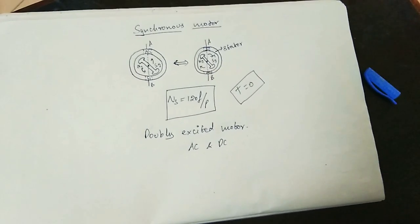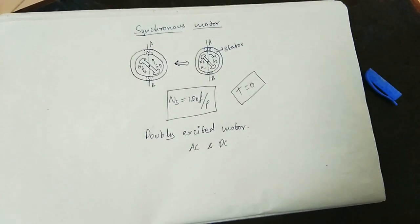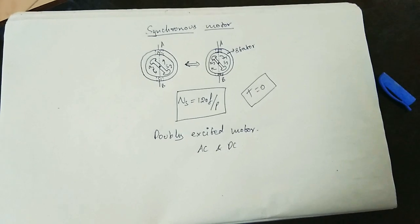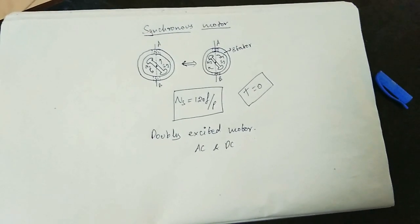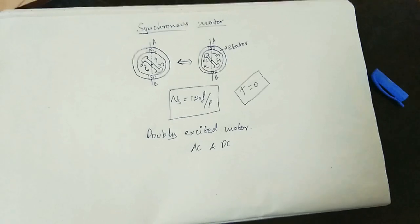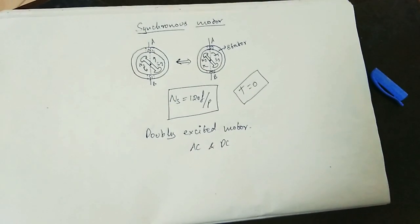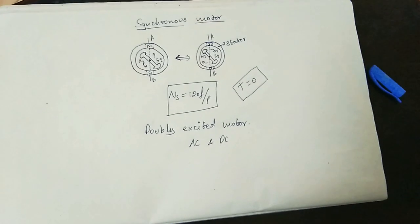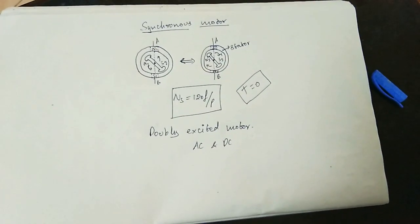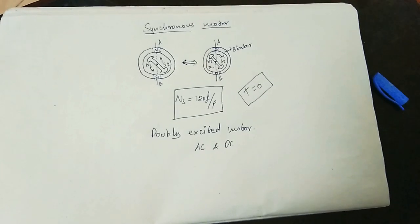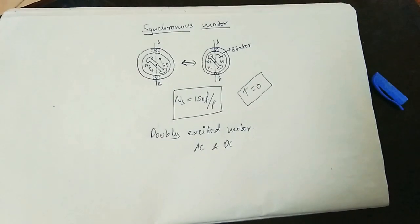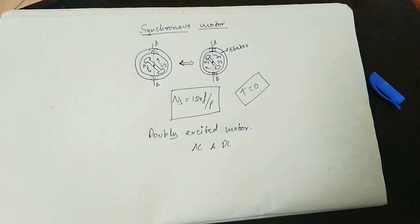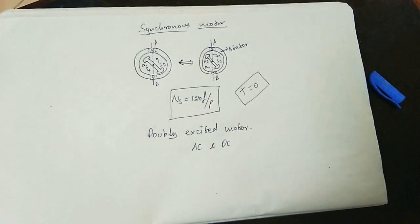The synchronous speed formula is N equals 120F over P. When we start the synchronous motor, there are many starting methods. For example, we can use an external rotating motor to bring the rotor up to synchronous speed before magnetic locking occurs.